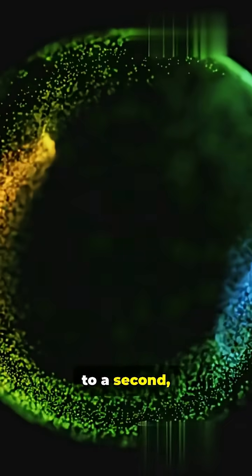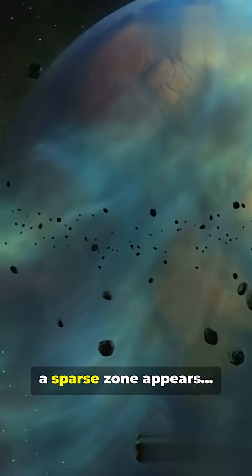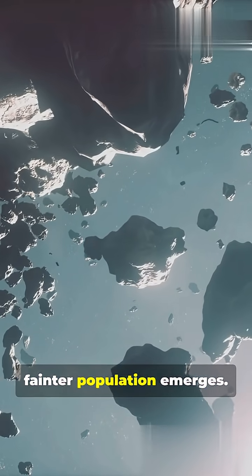Evidence points to a second, hidden outer belt. After a sharp Kuiper cutoff, a sparse zone appears, then a much fainter population emerges.